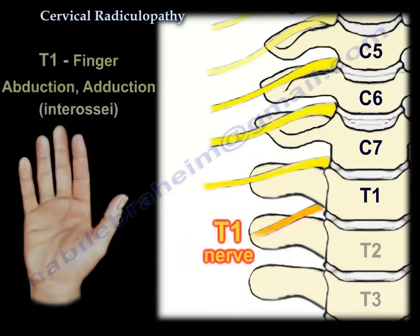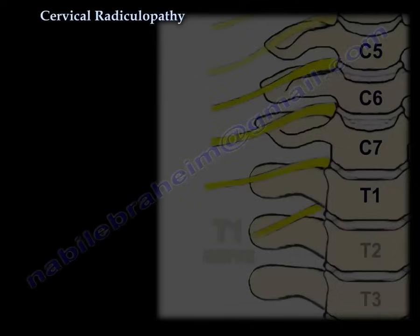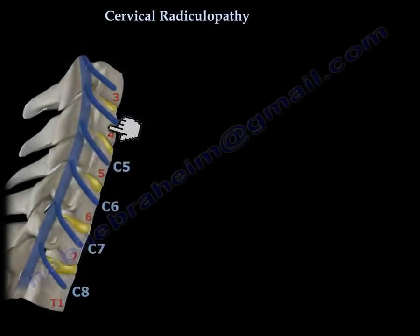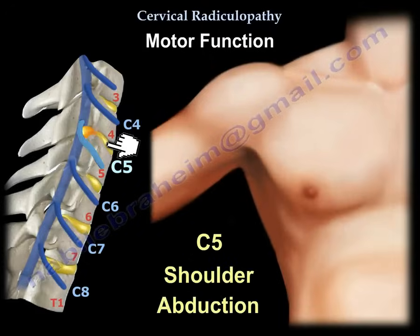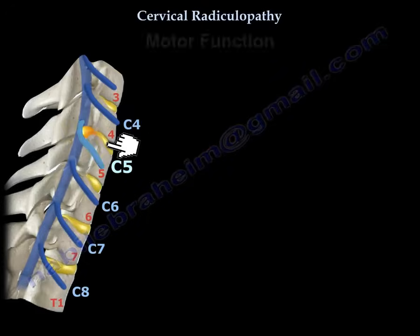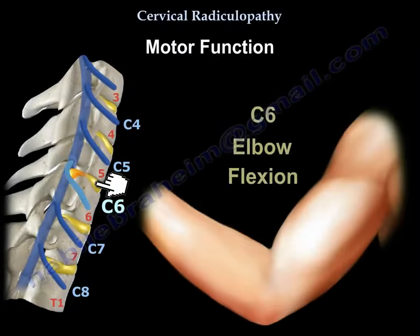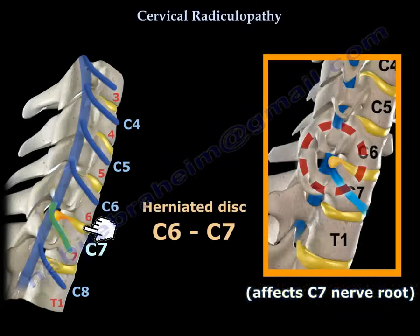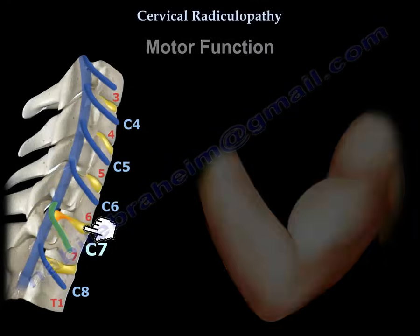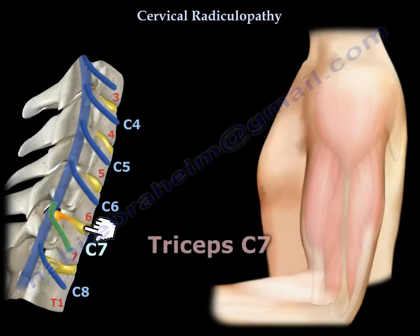Finger abduction is T1, as are the interossei. Shoulder abduction is C5. Elbow flexion is C6, elbow extension is C7, and the triceps reflex is also C7.